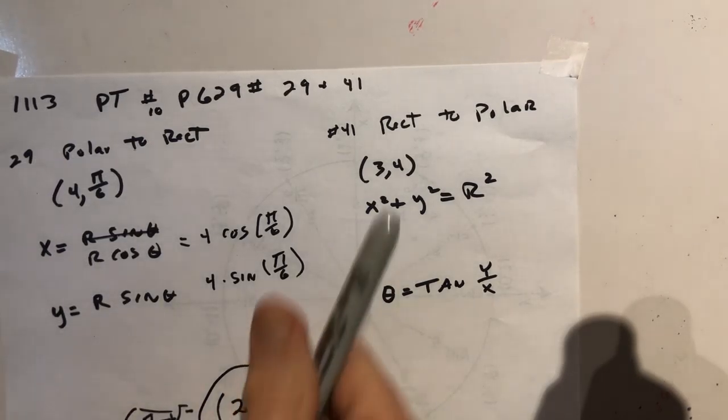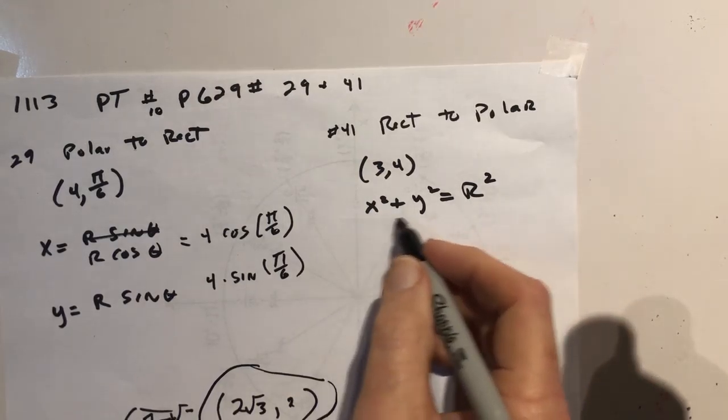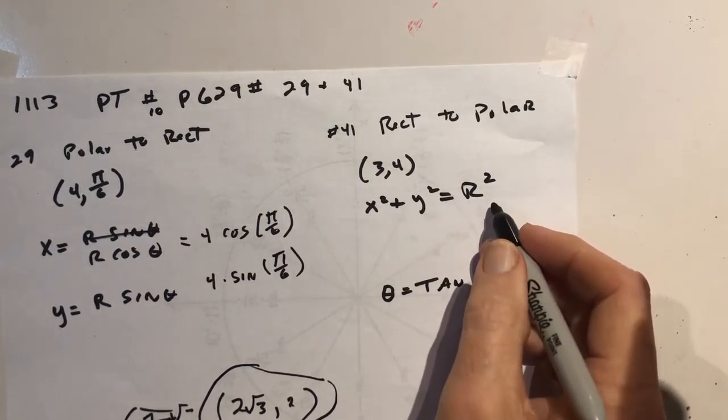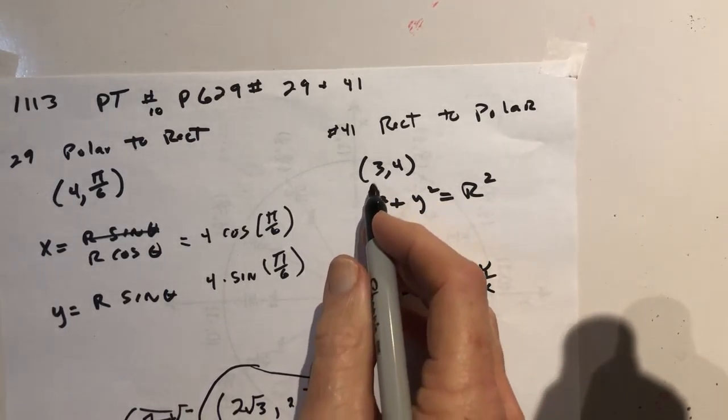I'd go the other direction from rectangular back to polar. This one's pretty easy. It's Pythagorean Theorem. So it's three squared plus four squared. But you should recognize that right away.